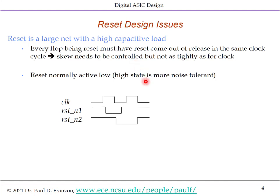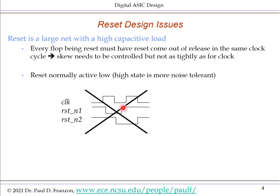Normally reset is active low. Here's an example of a bad pair of reset signals going to two different flops. Flop 1 is being released from reset in one clock period, while Flop 2 is released in a different clock period. This can lead to errors because Flop 1 will start operating correctly while Flop 2 won't. It's important that all resets are de-asserted in the same clock period.